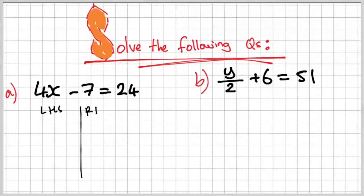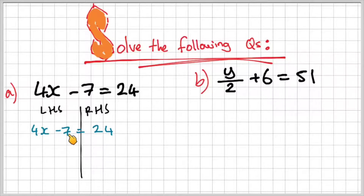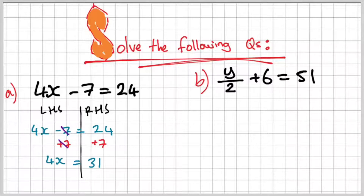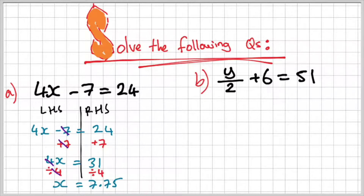This is what I got. I set up my left-hand side and right-hand side: 4x minus 7 is equal to 24. The first thing I do is add 7 to both sides. That cleans up to give 4x equals 31. Then I divide by 4 on both sides and get x equals 7.75.